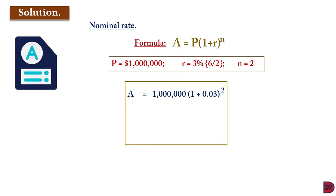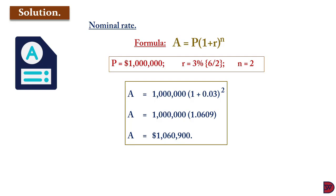So the solution will be 1 million multiplied by (1 + 0.03) raised to the power 2, giving us 1 million multiplied by 1.0609, resulting in a compound amount of $1,060,900. The interest is therefore $60,900.